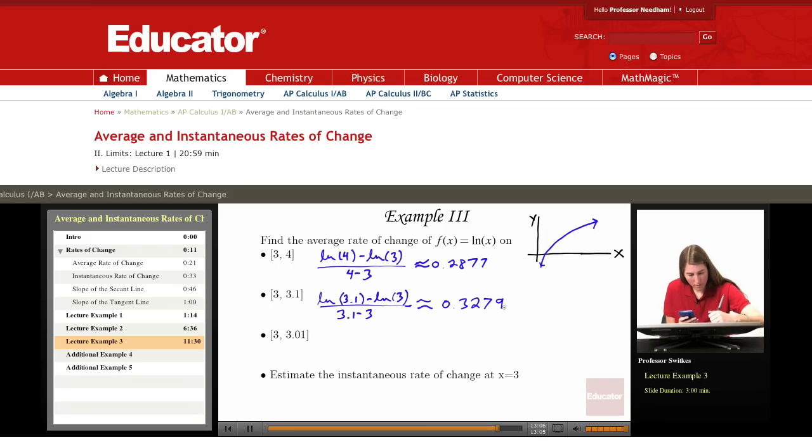Okay, and finally, on the even shorter interval, we'll take ln of 3.01 minus ln of 3 and divide by 3.01 minus 3. Let's see what we'll get there. ln of 3.01 minus ln of 3 divided by what becomes 0.01, I'm getting about 0.3328.